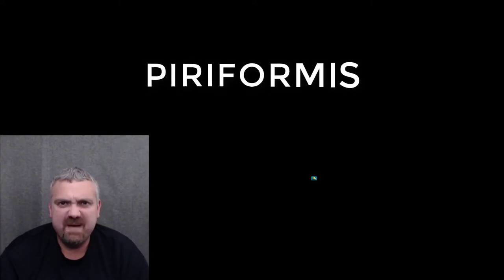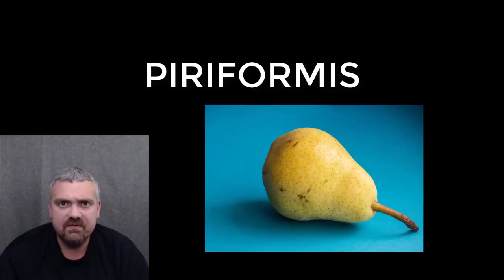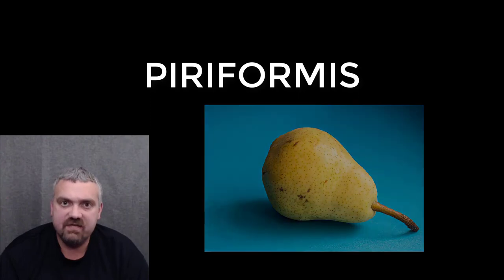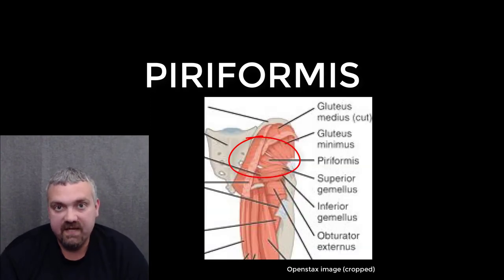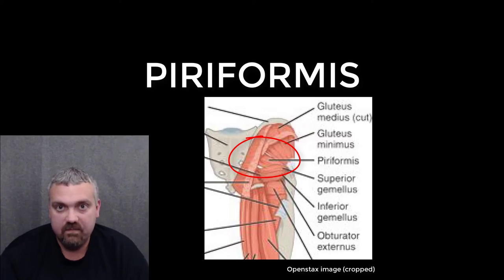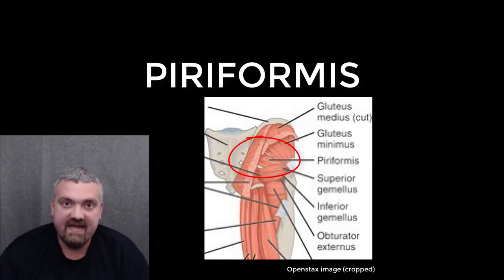The term piriformis means pear-shaped. It's actually quite similar to a pyramid-shaped muscle, but has more rounded edges. The piriformis muscle, which is one of the rotators of your hip, would be the key example there. It's also clinically significant because of a common condition called piriformis syndrome, which can affect the sciatic nerve.